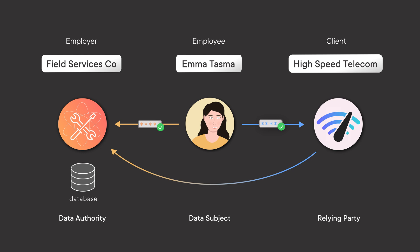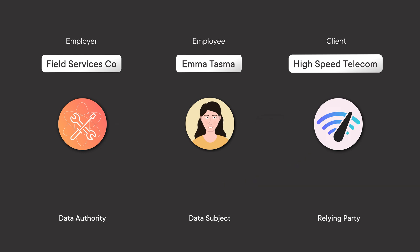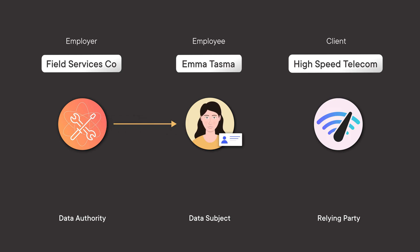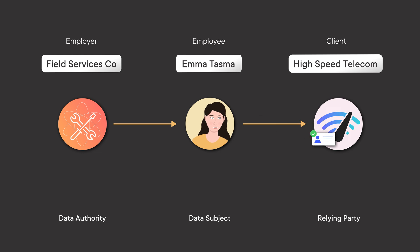In a decentralized world, what the issuer — Field Services — can do is issue a credential, an employee credential, down to Emma. She can keep it with her, and when she goes off to one of those clients, she can just present that credential directly to them. Because it's a portable credential, they can take the trust from that credential and allow Emma to access the services on their site.